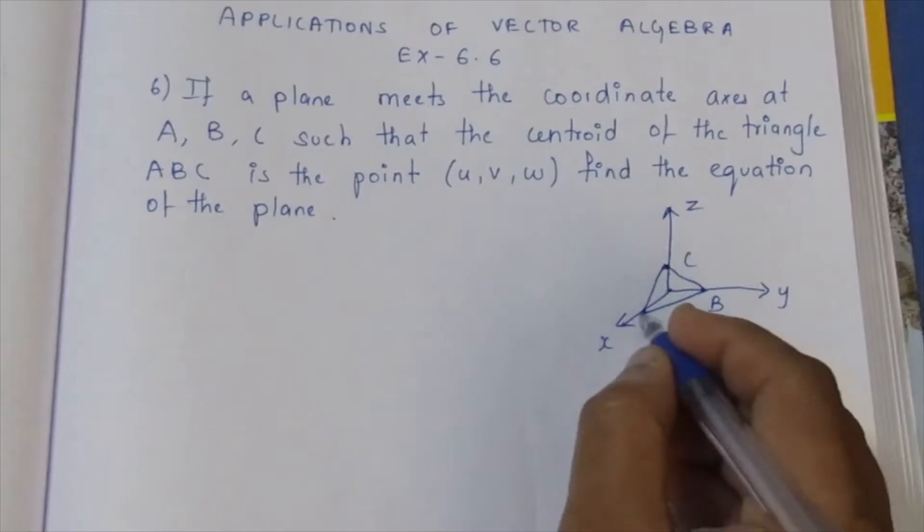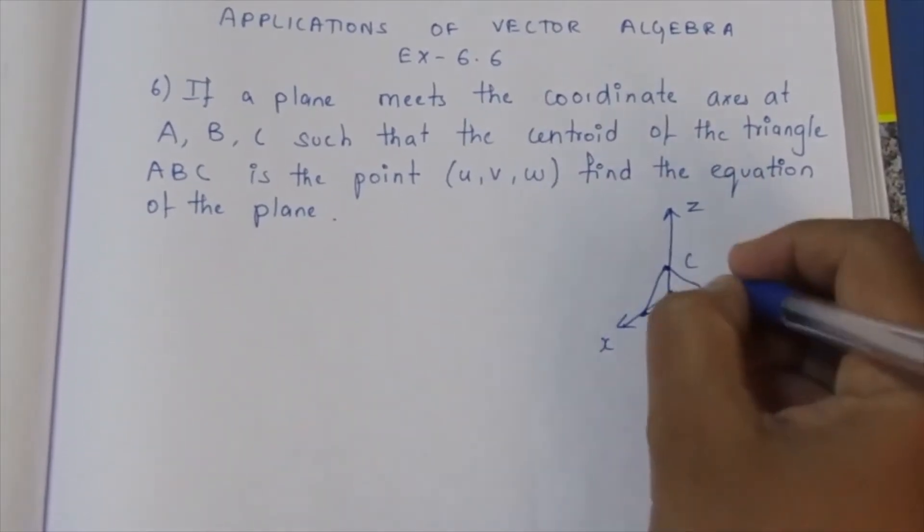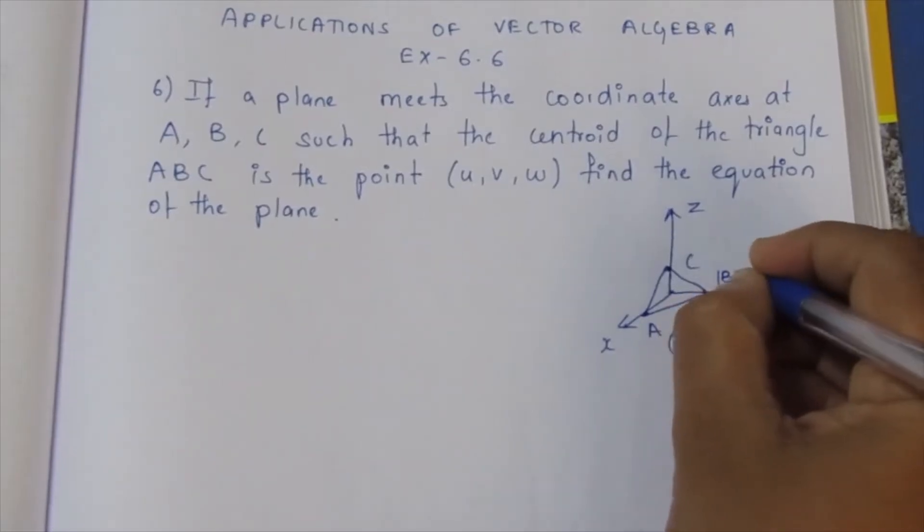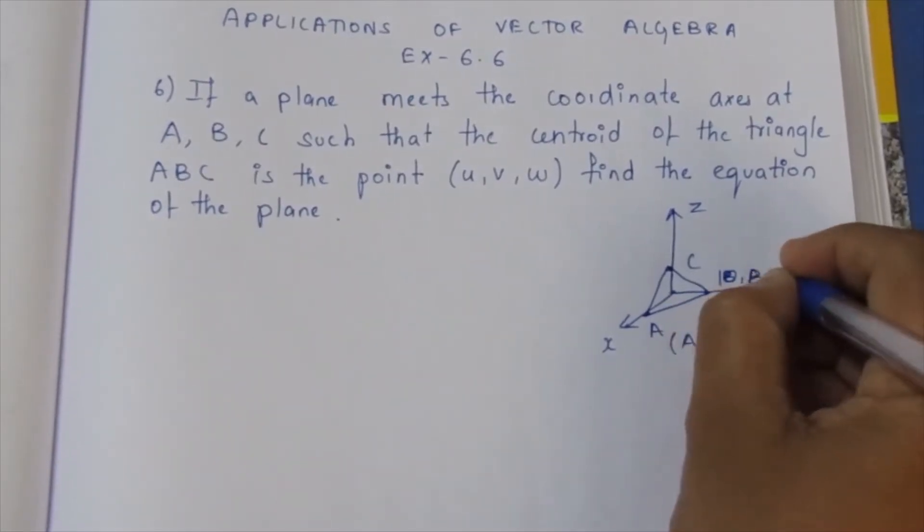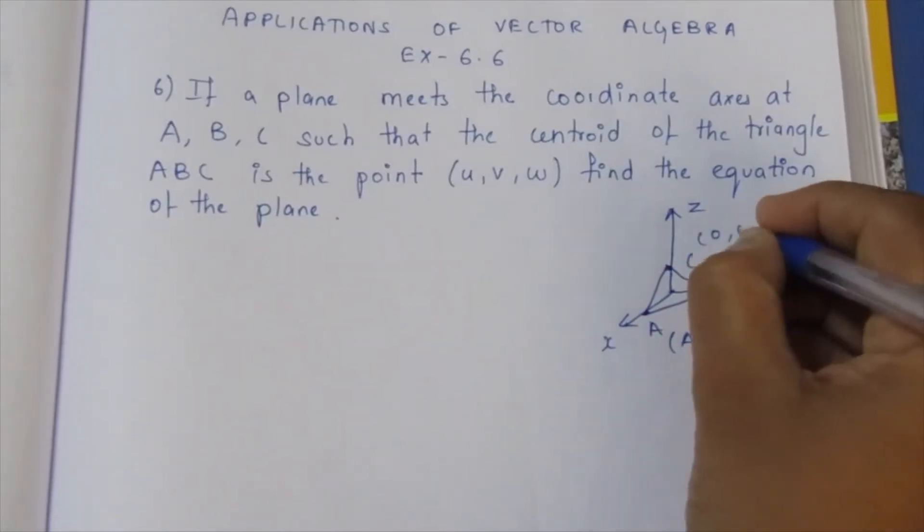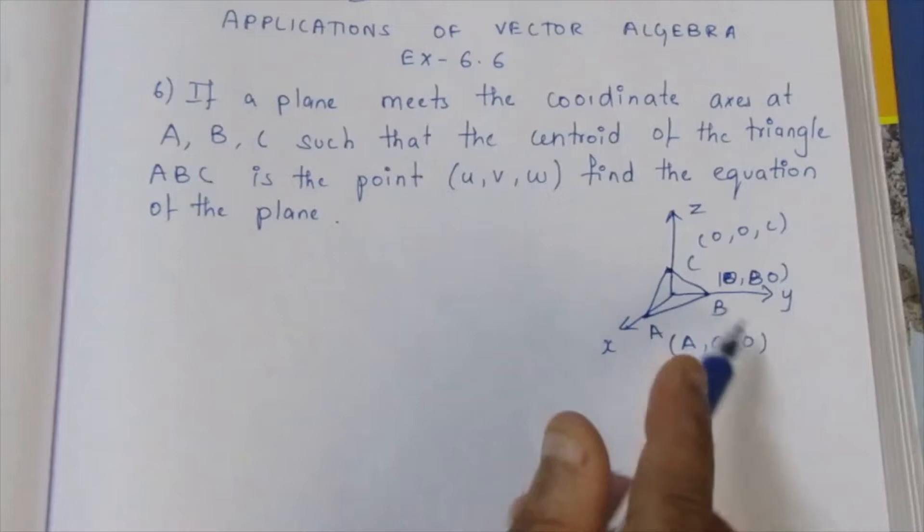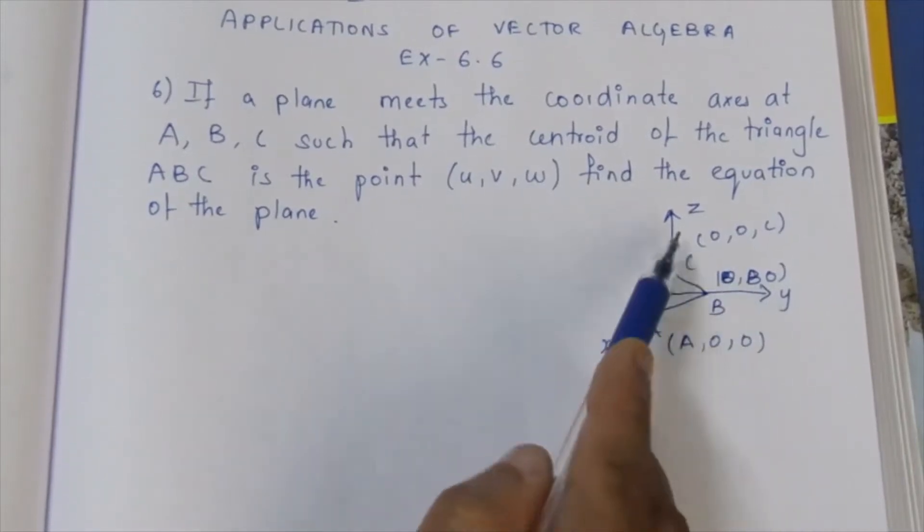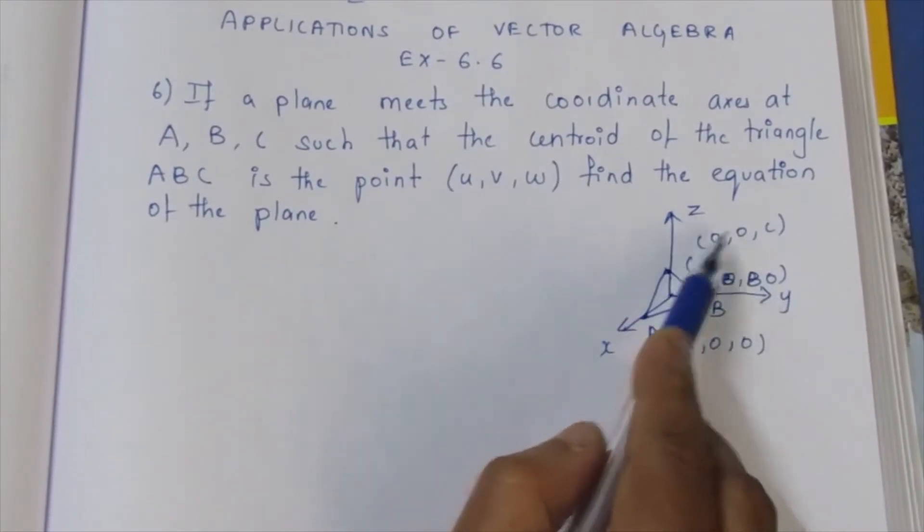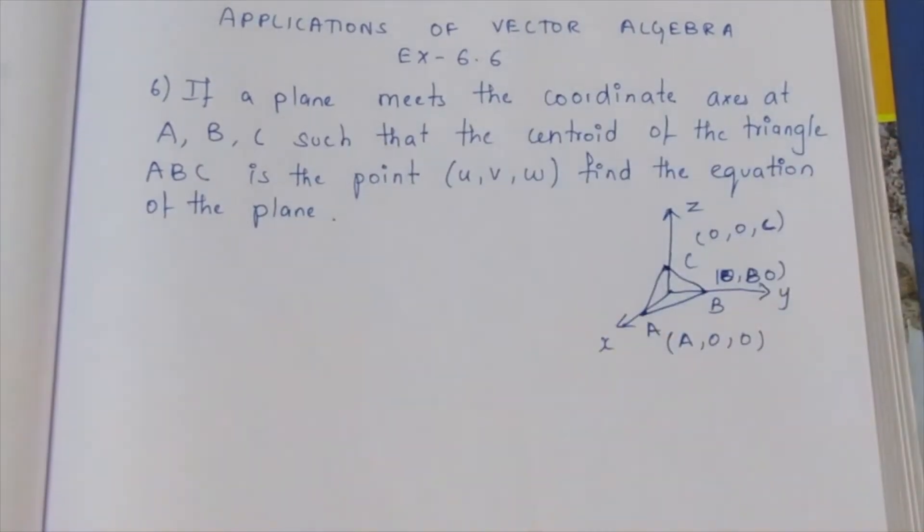The points are: A is at (a, 0, 0), B is at (0, b, 0), and C is at (0, 0, c). On the x-axis, y and z are 0. On the y-axis, x and z are 0. On the z-axis, x and y are 0. These are the points we need.